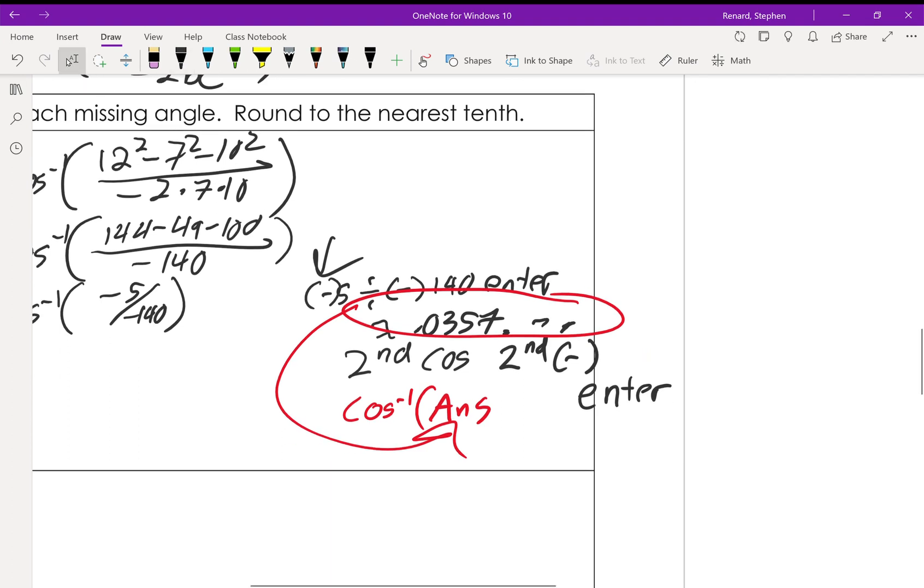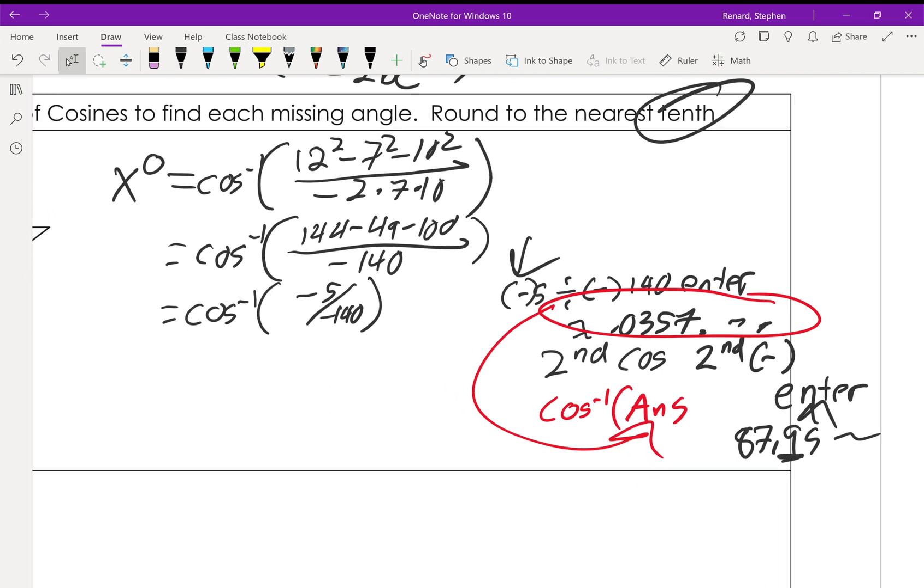And your calculator will tell you that if the cosine of the angle is 0.0357 whatever, the angle you're looking for is going to be 87.95 and then it gives a whole bunch of other stuff. Now you're told to round to the nearest tenth, which is this one right here, 5 rounds up, 9 rounds to 10. So x is going to be 88.0 degrees. Now we leave that zero in there because that's where we round it up to. It says the nearest tenth, so we give it the tenth.